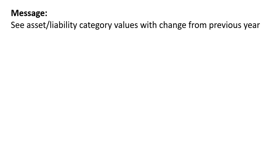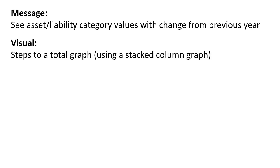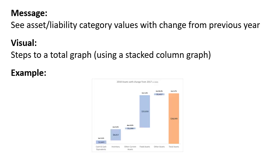When your message is showing asset or liability category values and year-over-year change from the balance sheet, use a 'steps to a total' graph — that's what this graph is called. It's really a stacked column graph, and this example shows how it can communicate information to executives and boards of directors much more effectively than a spreadsheet.